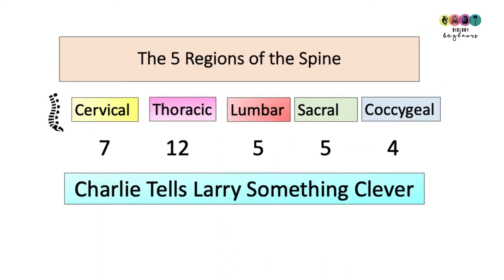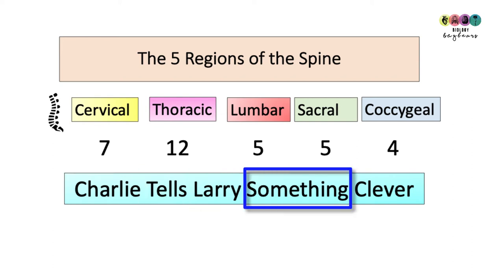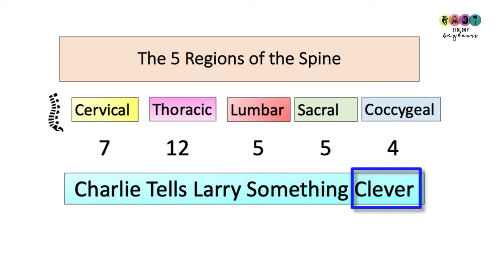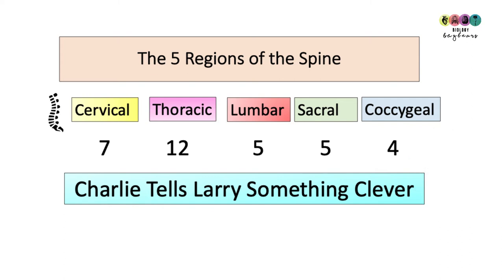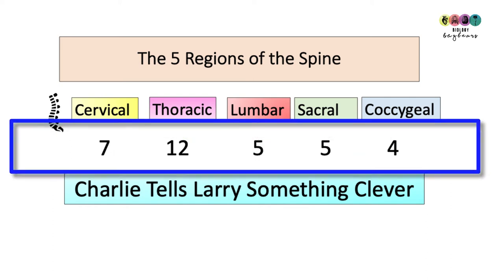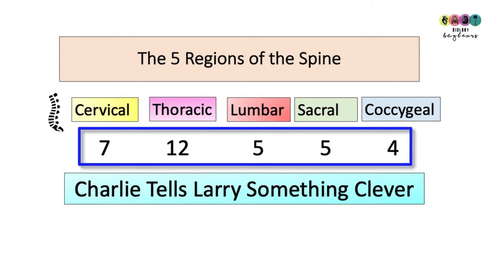To learn the five regions, use the rhyme: Charlie Tells Larry Something Clever. Charlie is cervical, Tells is thoracic, Larry is lumbar, Something is sacral, Clever is coccygeal. Thanks to Gary from the class of 2019 for that rhyme. For the number of bones in each region, learn them like a phone number: 7, 12, 5, 5, 4.